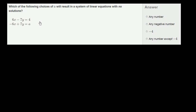Which of the following choices of A will result in a system of linear equations with no solutions? You're going to have no solutions if you take the same combination of x's and y's but get a different number. Another way of thinking about it: if you plot the equation and it has the exact same slope but a different y-intercept, you get parallel lines. Let's algebraically manipulate the second equation so the left-hand side looks exactly the same, then make sure the right-hand side is different — that gives no solutions.